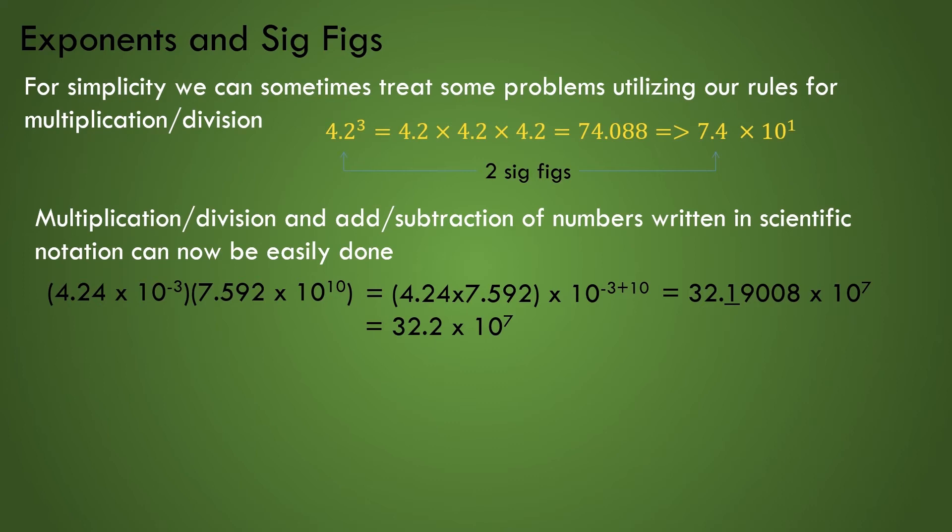To get an answer in the proper normalized scientific notation form, the last step involves moving the decimal to the left, which means we must add 1 to the exponent, giving us the value 3.22 times 10 to the power of 8. The final result now clearly has 3 sig figs.